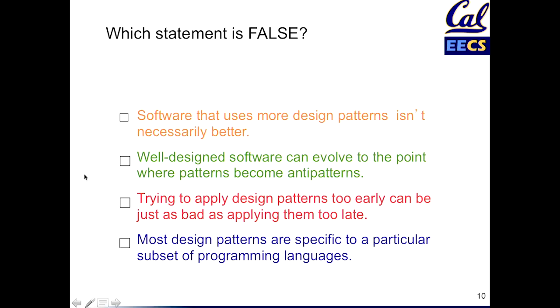Well-designed software can evolve to where patterns become anti-patterns — it surely can. Part of the entire motivation of Agile is embracing change. You accept that this is going to happen, and refactoring with tests as a basis is the way that you get yourself into the position to refactor your code, get rid of the anti-patterns, and replace them with good code.